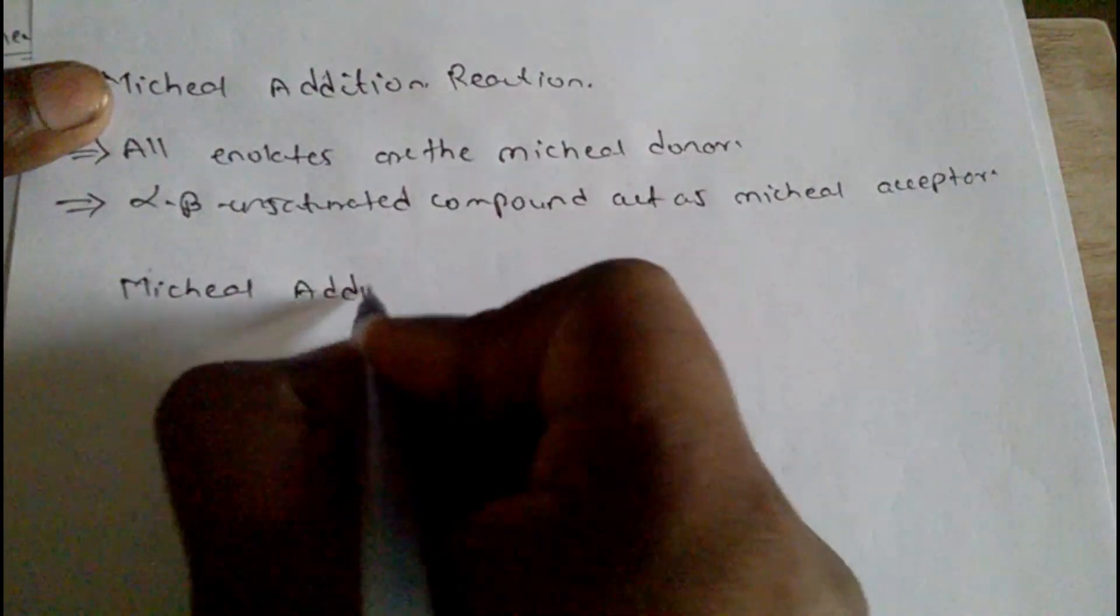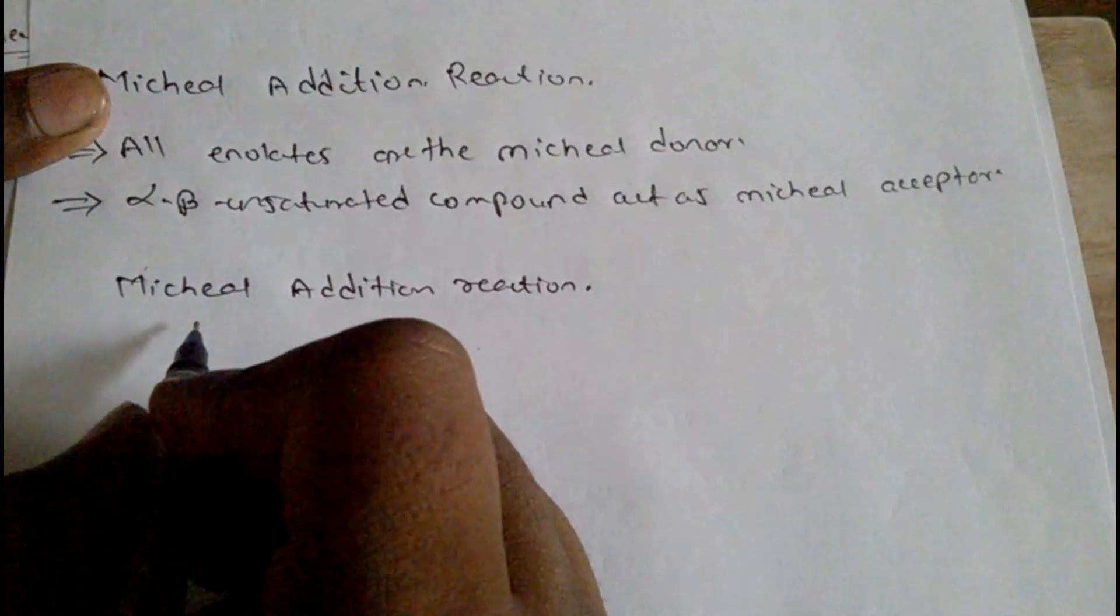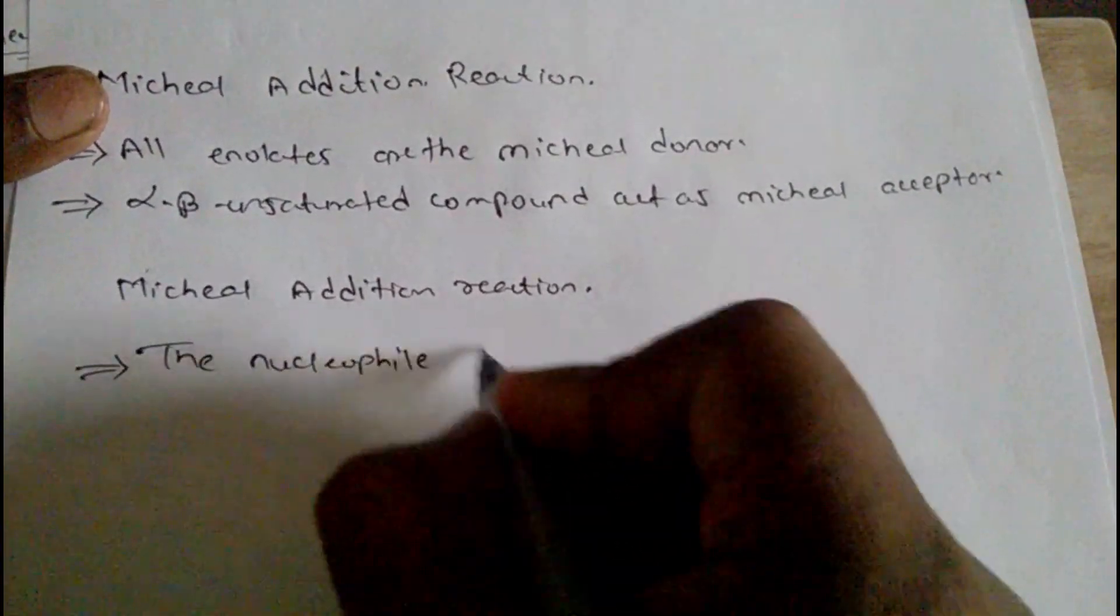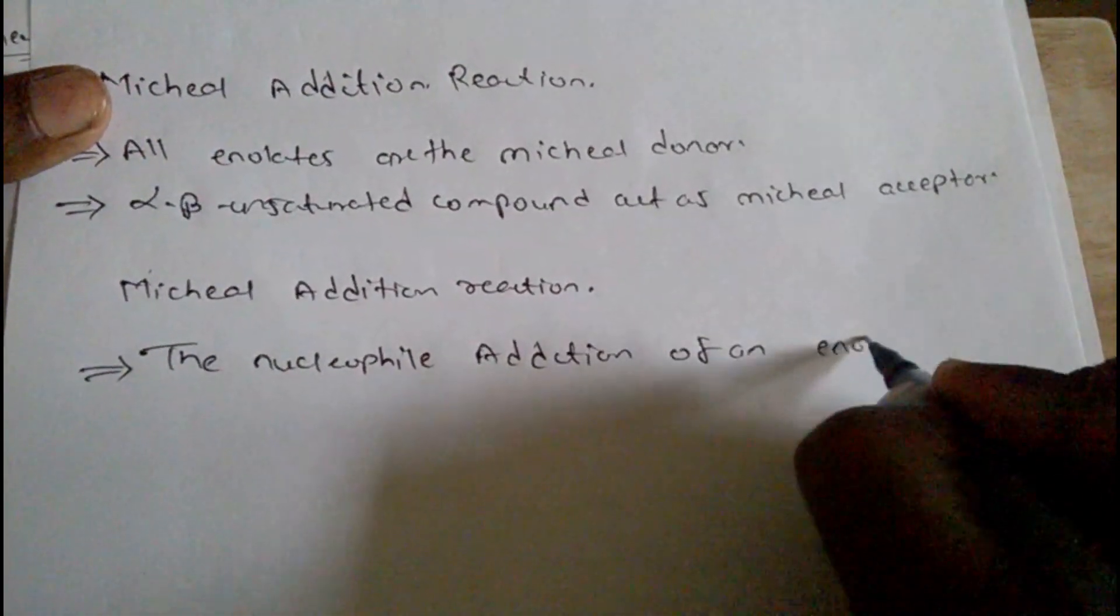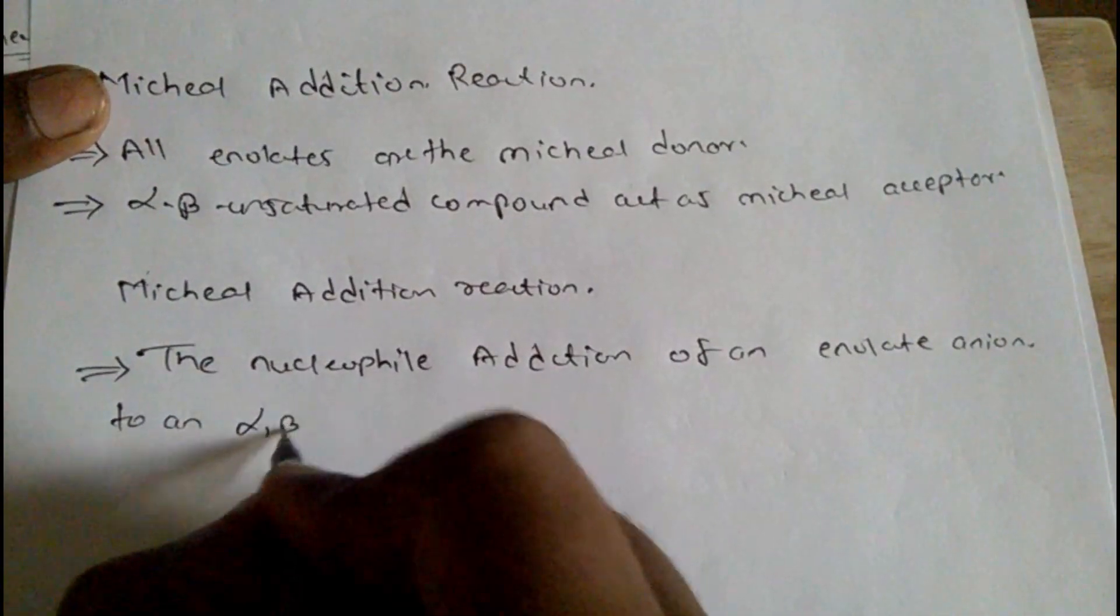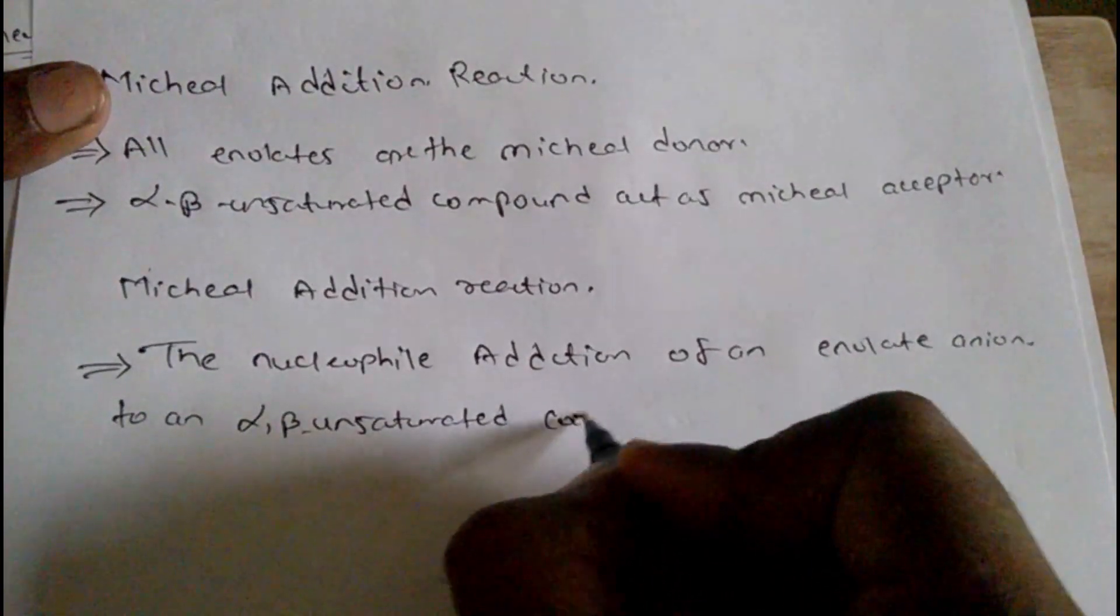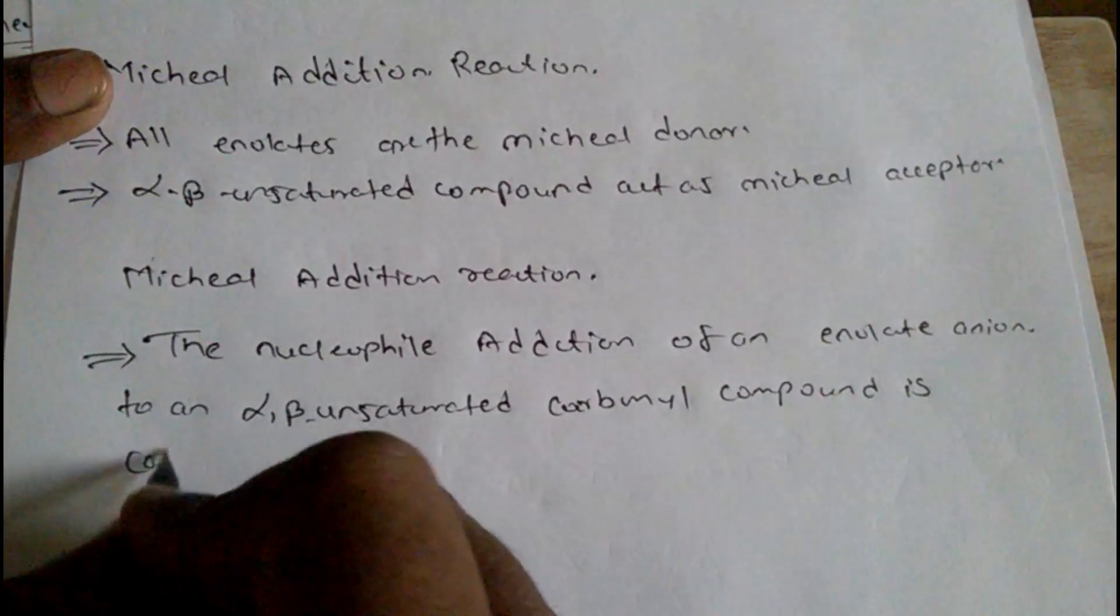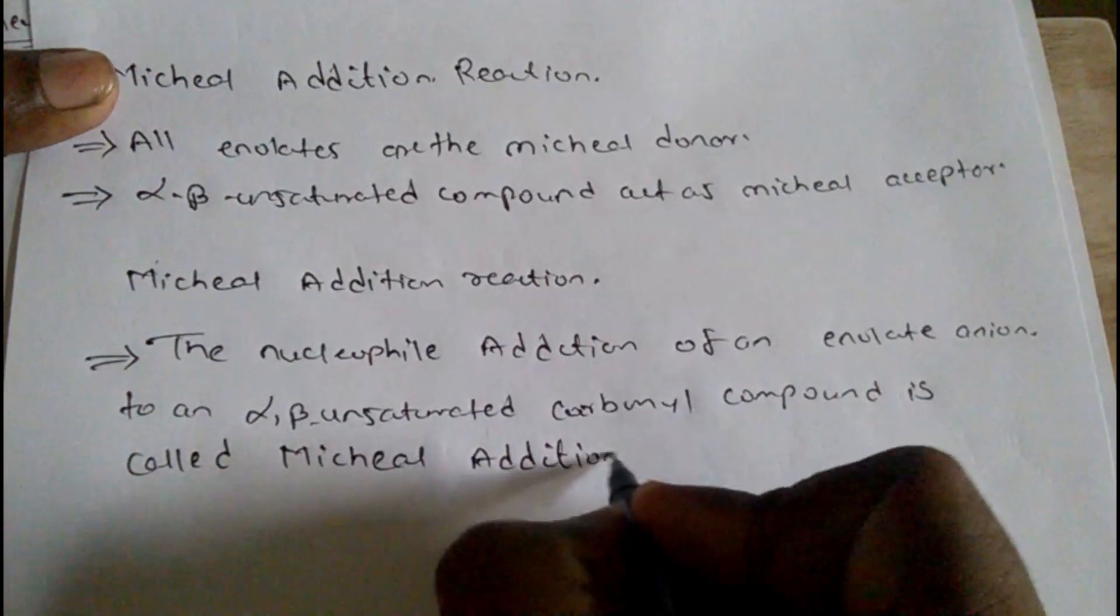Michael addition reaction: The nucleophilic addition of an enolate anion to an alpha-beta unsaturated carbonyl compound is called Michael addition reaction.